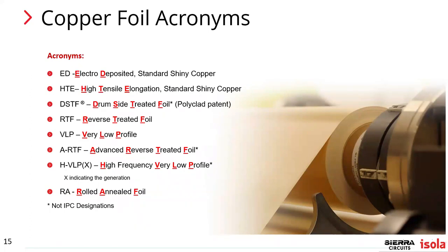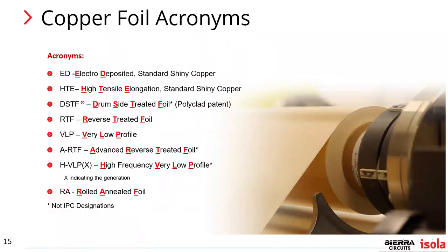Looking at acronyms: ED means electro deposited — that's your standard shiny copper foil. HTE elongation is a foil with a different grain structure more toward the battery foil end, giving it more flexibility and making it softer. Drum side treated foil was a PolyCLad patent originally introduced when they started using the drum side to bond to the laminate. Reverse treated foil came from other copper foil suppliers not involved with the patent — both are identical. The industry then moved to very low profile copper foil to improve edge capability and electrical performance. Advanced RTF foil was introduced about four or five years ago — Kotech was probably the first company to introduce it. Isola now offers this foil on high-end products, providing about 5 to 8 percent improvement over HVLP copper foil.